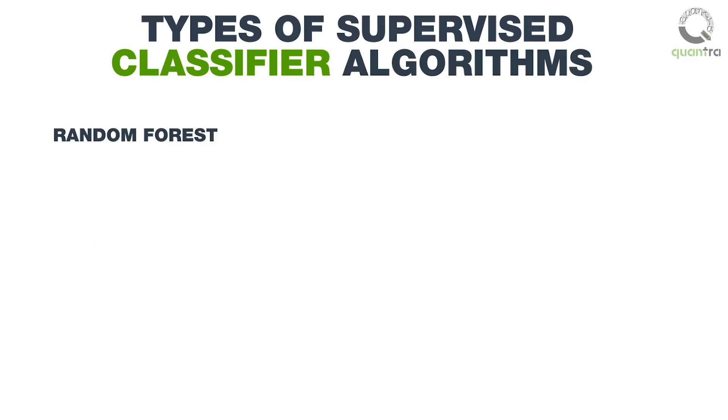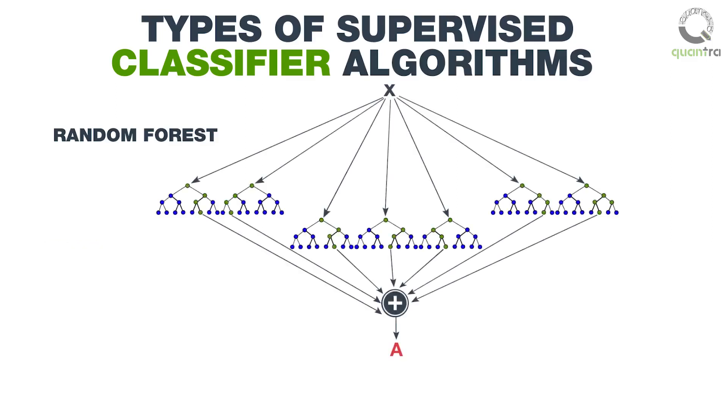Once the training is done, the remaining data is ready to be tested for which the data element, say X, which needs to be classified is processed through every decision tree. Then, each of the decision trees allots a class. A, A, A,